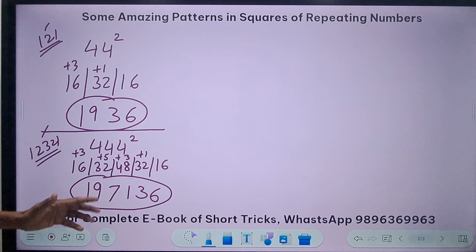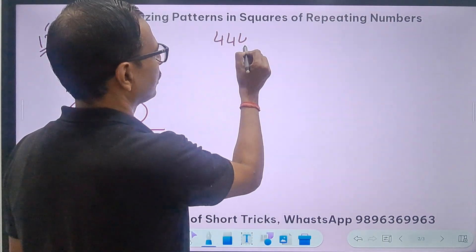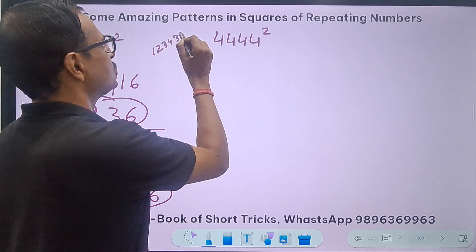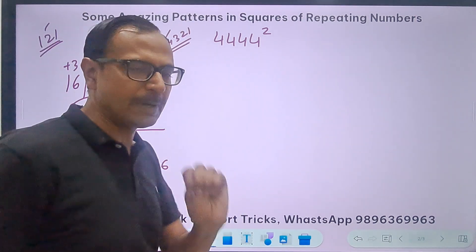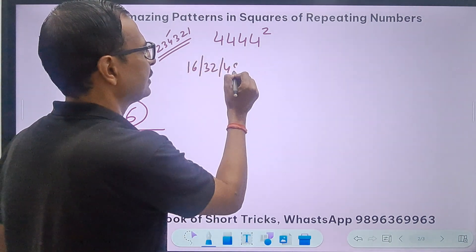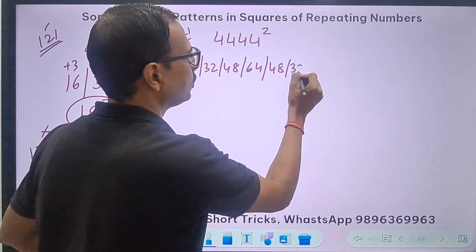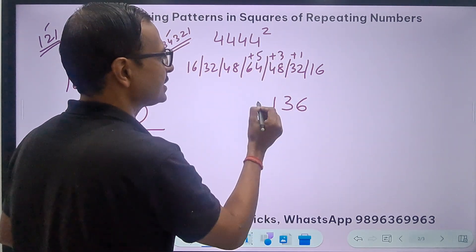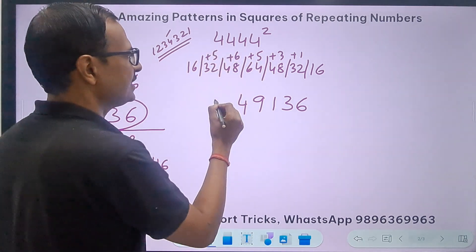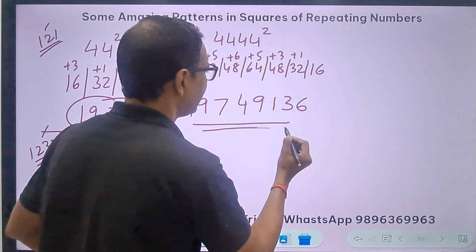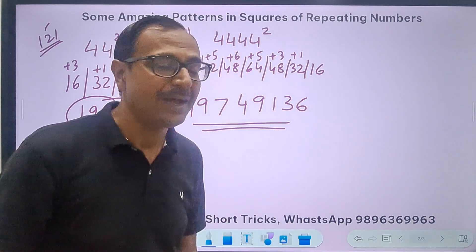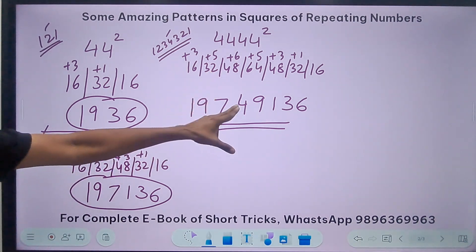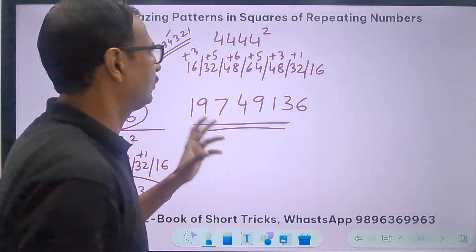Now 4444 squared uses the 1-2-3-4-3-2-1 rule, so I go up to the fourth multiple of 16: 16, 32, 48, 64, then back 48, 32, 16. Carrying through: 6; 1 carry, 33 → 3; 3 carry, 51 → 1; 5 carry, 69 → 9; 6 carry, 54 → 5 carry, 37 → 3 carry; then 19. So 4444² = 19749136.